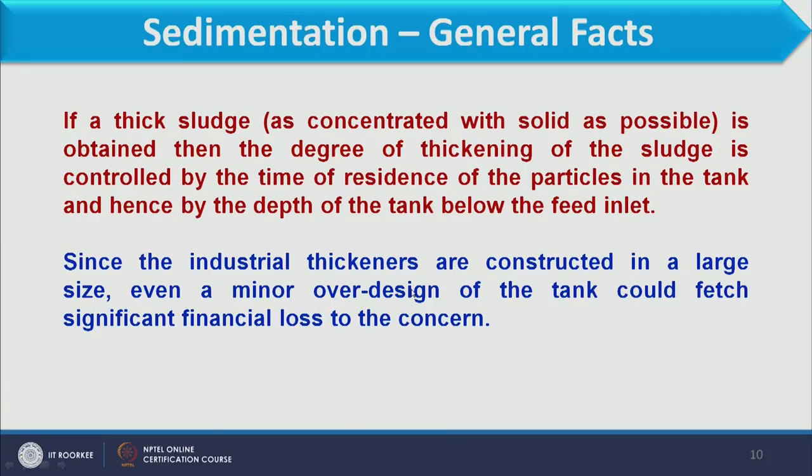Since industrial thickeners are constructed in large sizes, even a minor over-design of the tank could cause significant financial losses. In subsequent slides, you will see that the diameter of the tank can be up to 150 meters. Given such a large size, we must design the sedimenter very carefully, as a small over-design leads to significant financial loss.